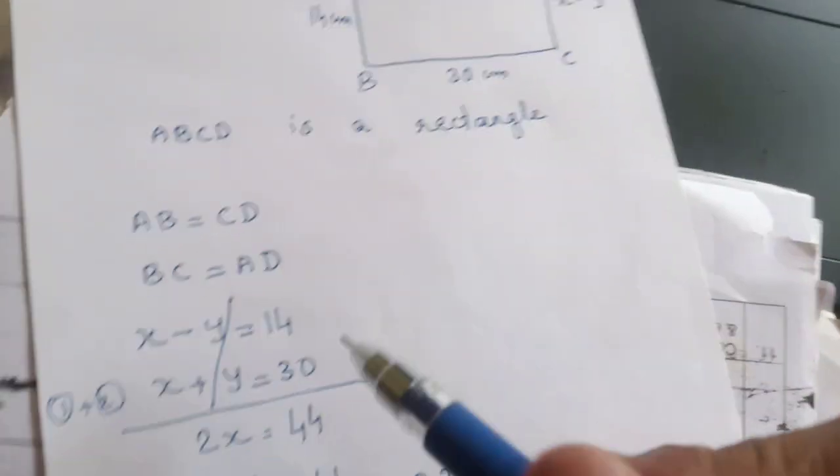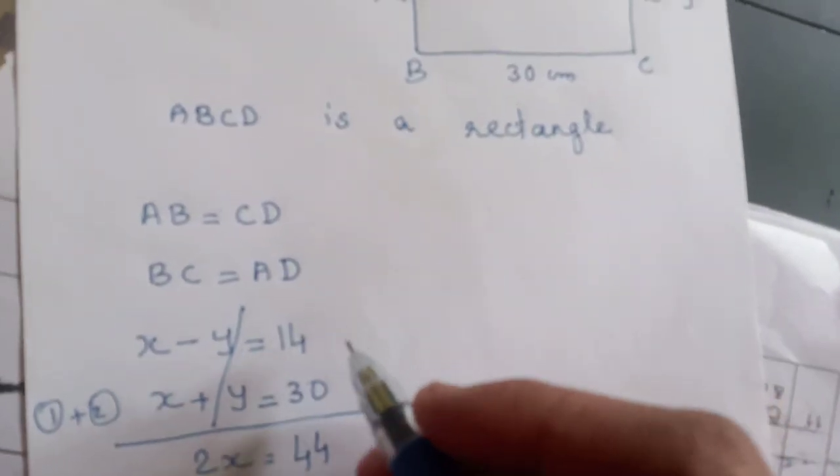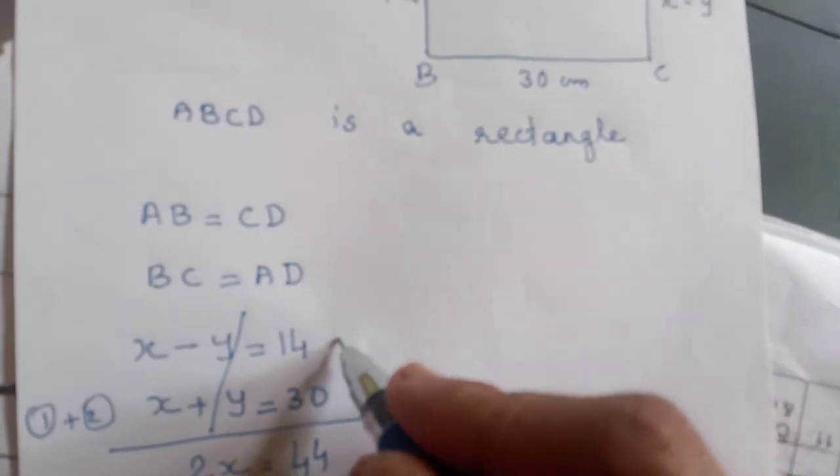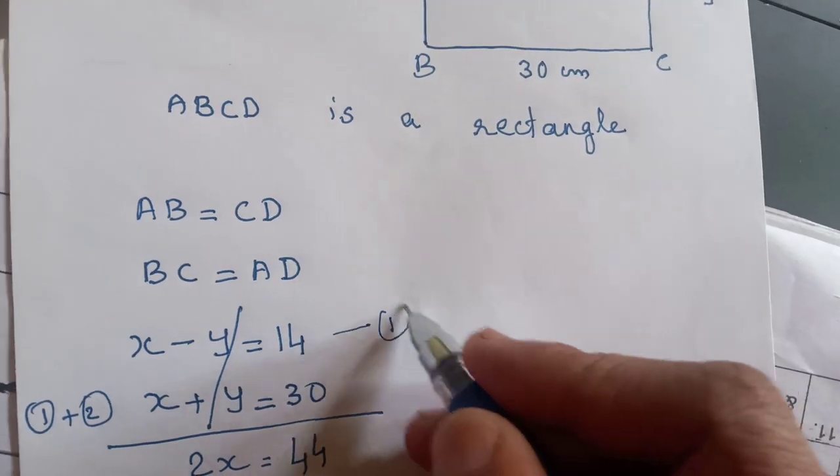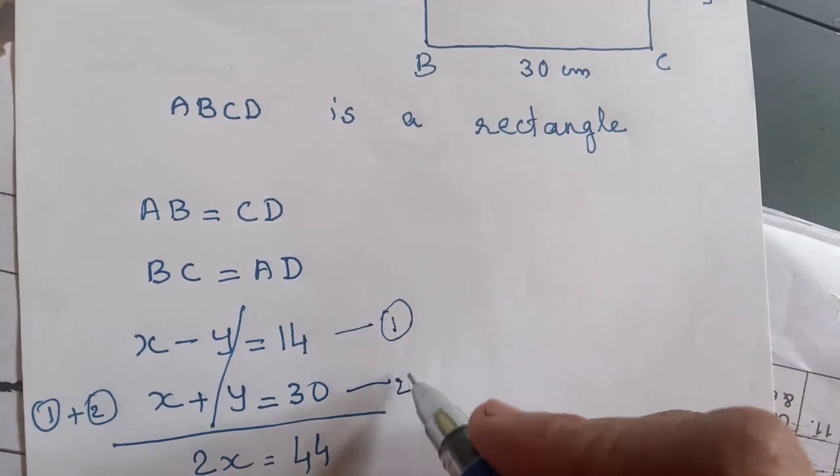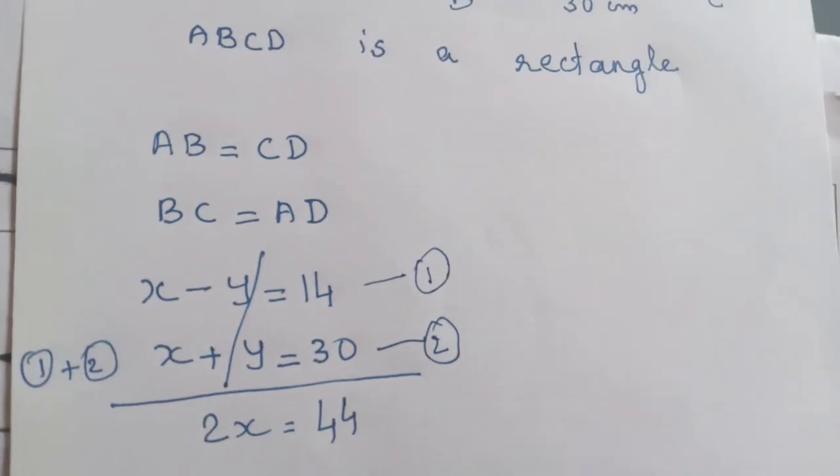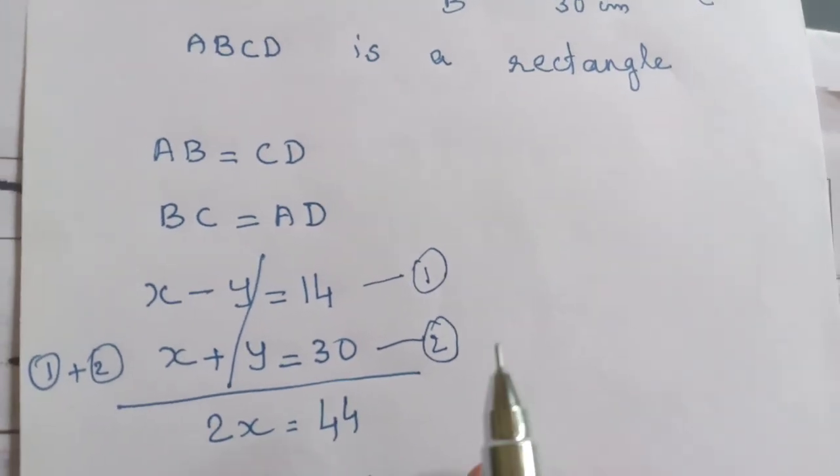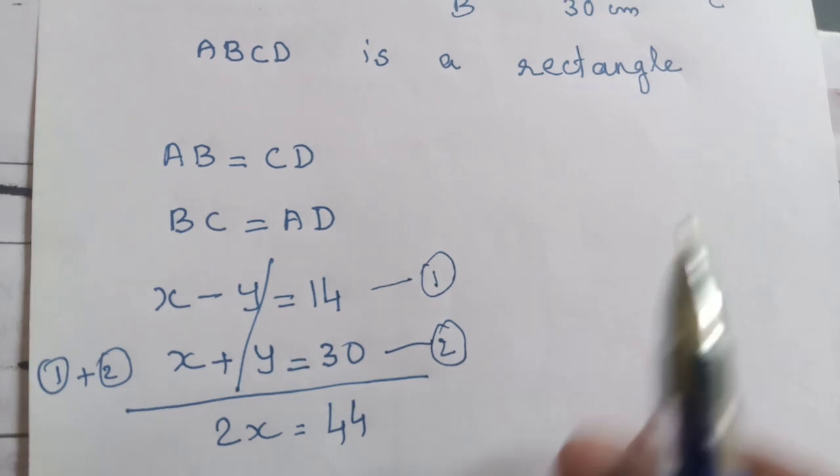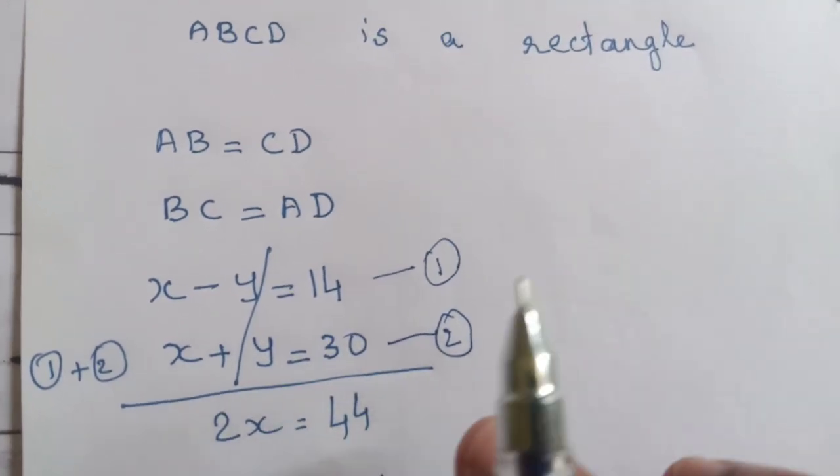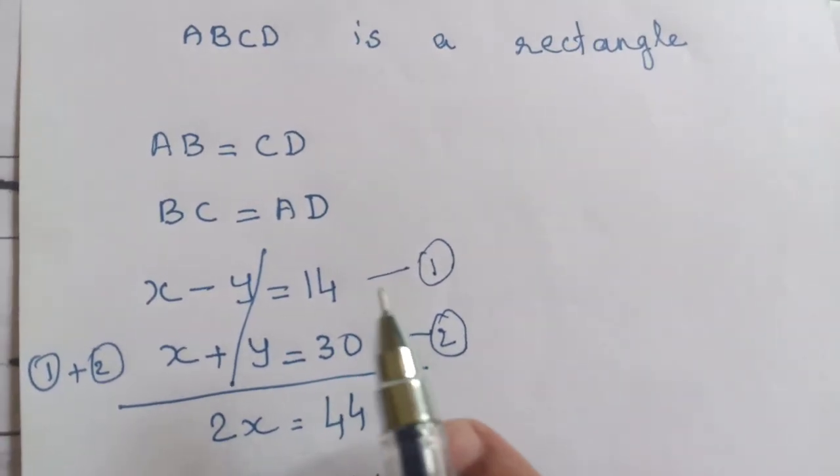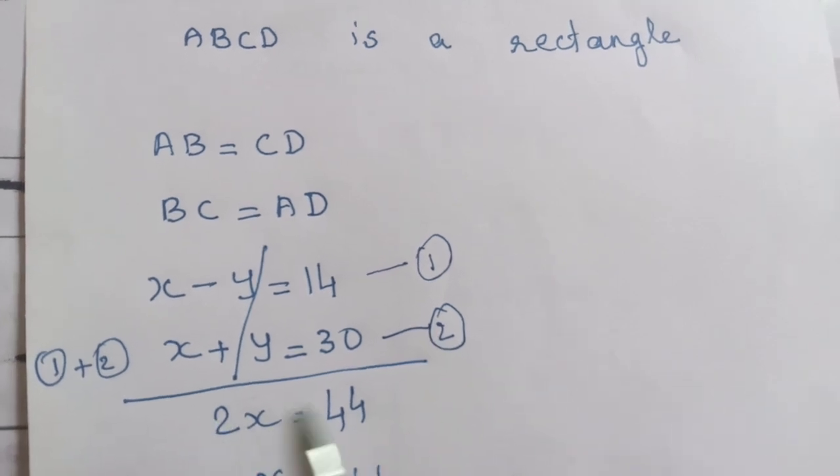We have two equations. Whenever we're given two equations like this, we need to solve them. Let's label them as equation 1 and equation 2, and solve them.